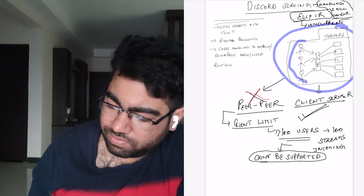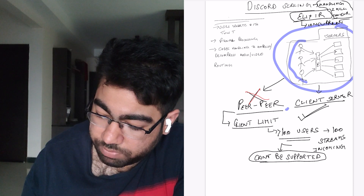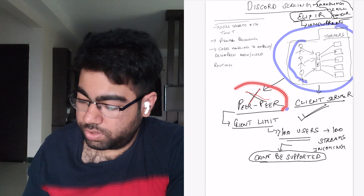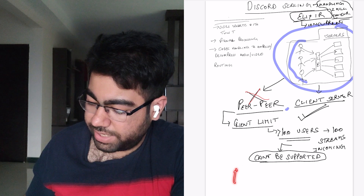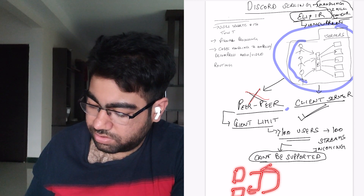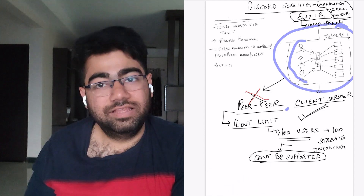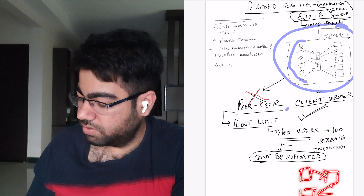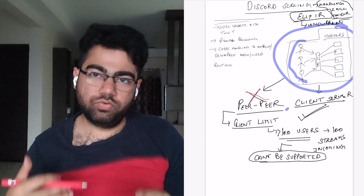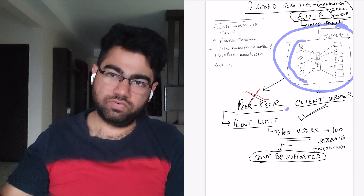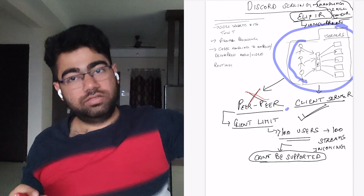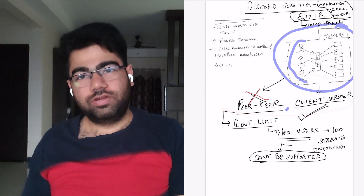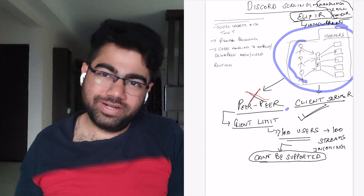We can use two types of models: peer-to-peer connection or the client-server model. In peer-to-peer, clients interact directly with each other. In the client-server model, there is a server — you speak, your audio goes to the server first, and then the server redirects it to the other clients on the group call. As you can see on the screen, peer-to-peer is already crossed out, so you might have guessed which approach Discord uses.